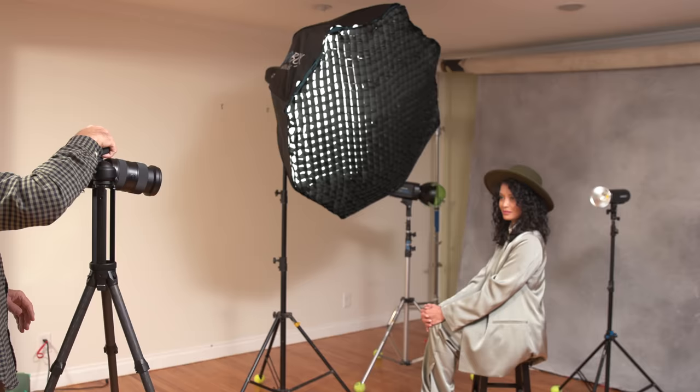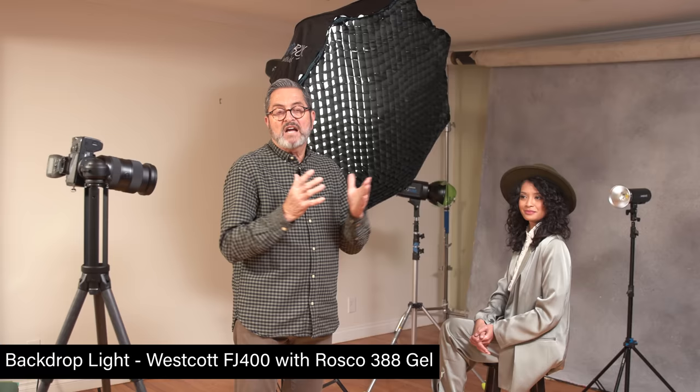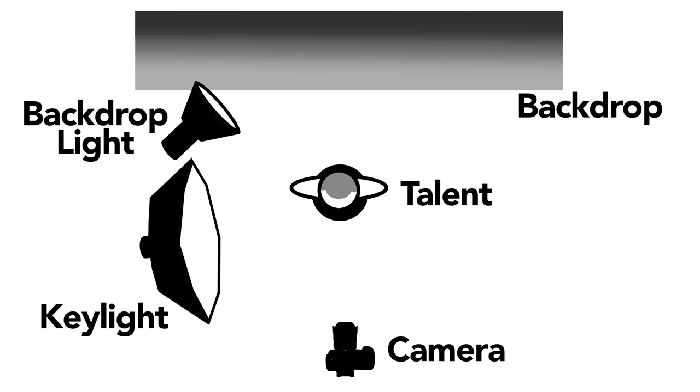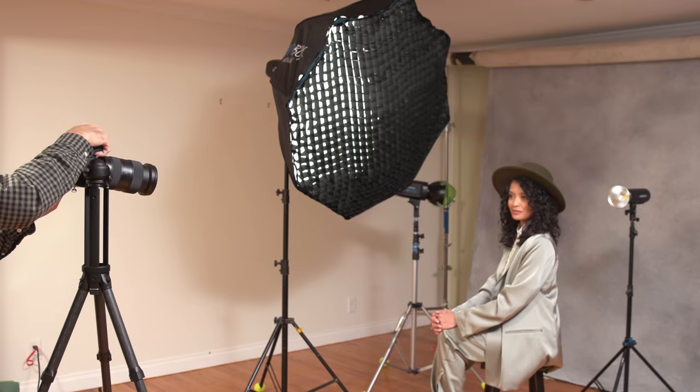The whole idea for this shot is to keep a nice green palette — we've got it in her suit jacket, her pants, and the beautiful green hat. So we're going to put some green on the background to make those two tie together and give us that beautiful color palette. I'll always be working in a color palette that strengthens the image and ties everything together. We're putting a Rosco 388 green gel on the background with our second light.